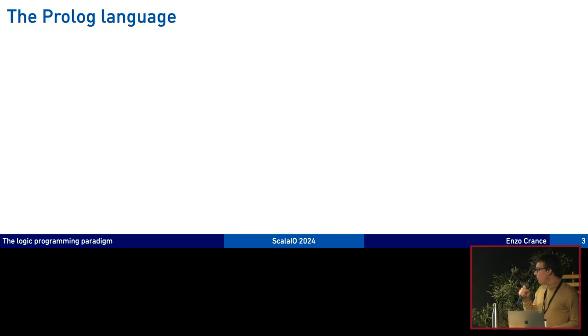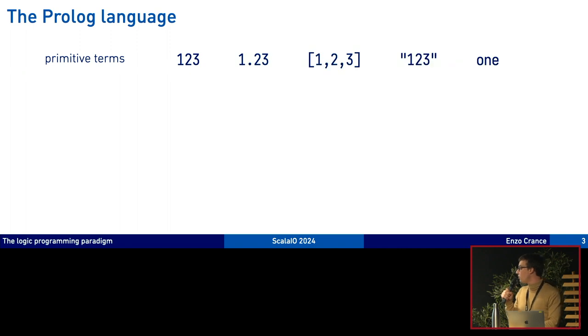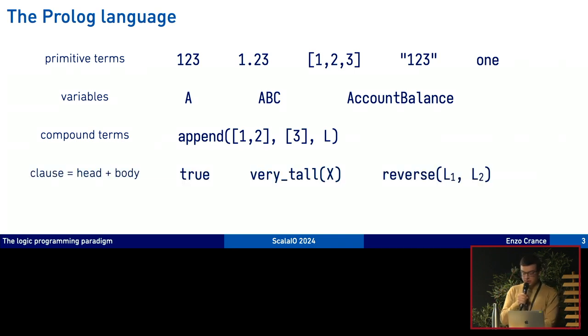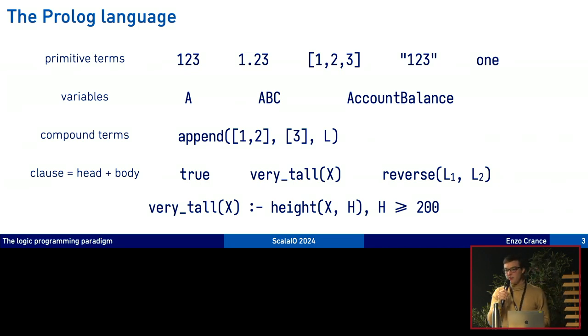Let's see what the prologue language looks like. We have like in a lot of languages primitive terms - numbers, lists are primitive, strings are primitive and the last one is an atom. It's kind of a symbol we can use to identify our data. We have variables which start with a capital letter and we have compound terms comprised of an atom first and then zero or more arguments. And we also have clauses which are a head and a body. The logical interpretation of this is that the head of the clause is true if the body can be made true.